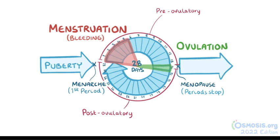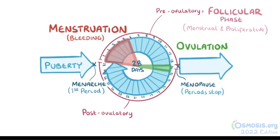For the ovary, the two weeks leading up to ovulation is called the ovarian follicular phase, and this corresponds to the menstrual and proliferative phases of the endometrium. Similarly, the two weeks following ovulation is referred to as the ovarian luteal phase, which also corresponds to the secretory phase of the endometrium.